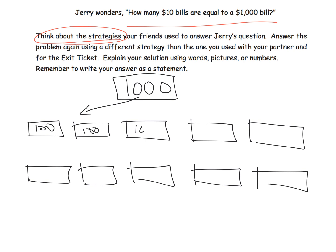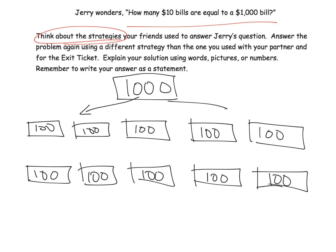$100, another $100, another $100, another $100 — so that's $500 — and then $600, $700, $800, $900, and $1,000. So here's our $1,000, but we did it in terms of $100 bills.